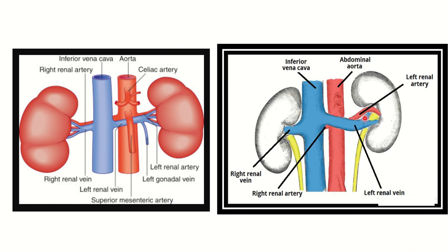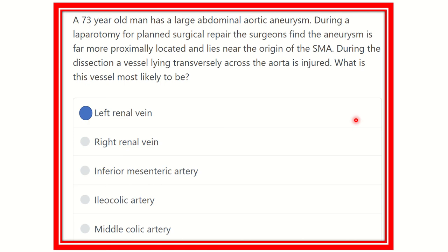In the second picture, we can also see the left renal vein crossing the abdominal aorta transversely. So our answer is the left renal vein, because it passes transversely across the aorta and is very close to the origin of the superior mesenteric artery. Thank you.